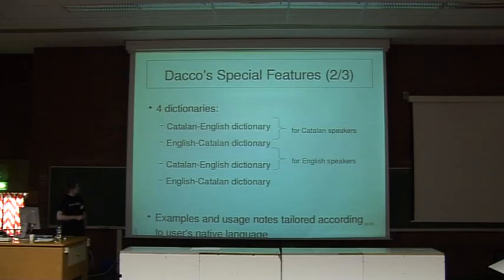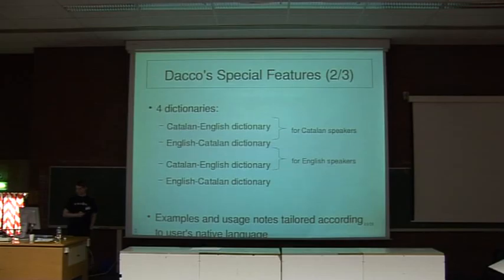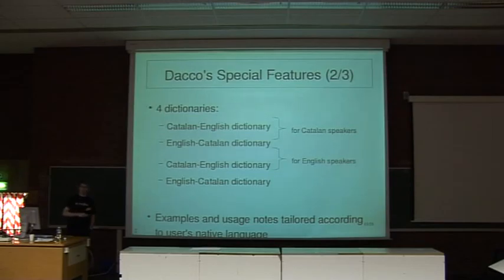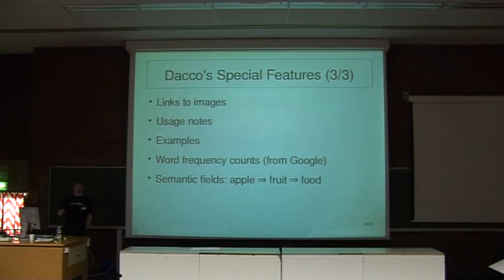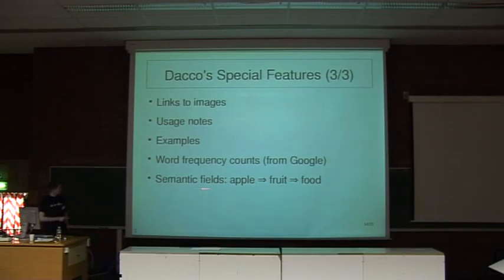DACO doesn't have just one, two, or three dictionaries — we have four dictionaries: a Catalan-to-English dictionary, and an English-to-Catalan dictionary for Catalan speakers, and the same for English speakers. This allows us to focus the examples, notes, image links, and usage notes for each audience. We also have word frequency counts from Google — each entry shows how many times it appeared on Google, so you can use this to know if 'lift' is used more than 'elevator'. We also use semantic fields, so each entry has fields like 'fruit' and 'food' for apple.